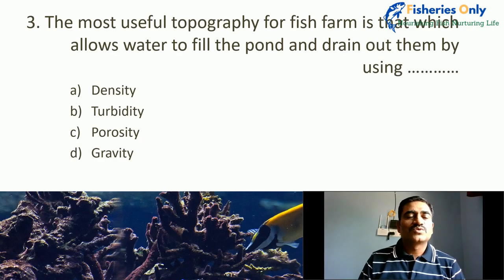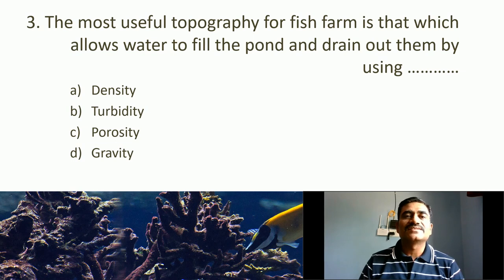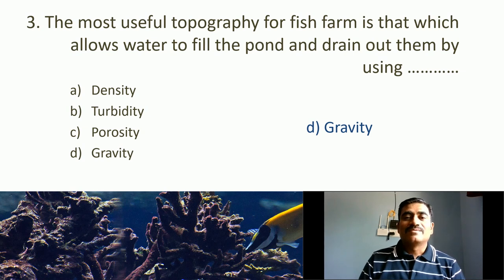Third MCQ: The most useful topography for a fish farm is that which allows water to fill the pond and drain out by using what? Options are density, turbidity, porosity, and gravity. The correct answer is gravity. We can minimize the expense on pumping due to the use of gravity for filling the pond or reservoirs.